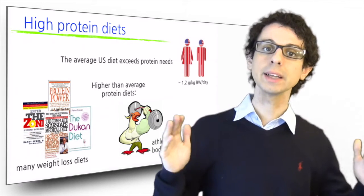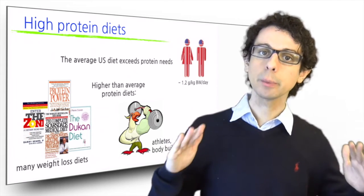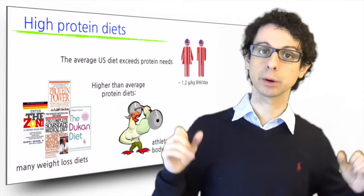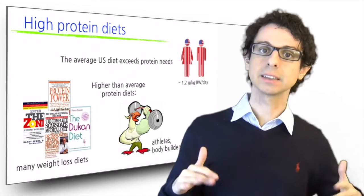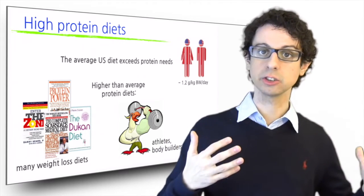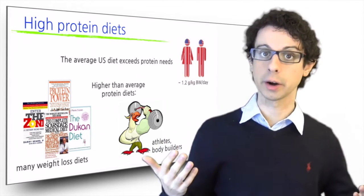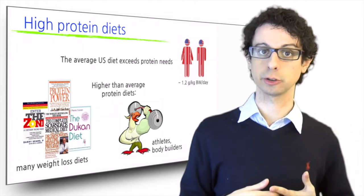One is weight loss dieters. Many popular weight loss diets are high protein diets. These diets make you lose weight fast, although most of the initial weight loss is not fat but water to flush out the extra nitrogen.